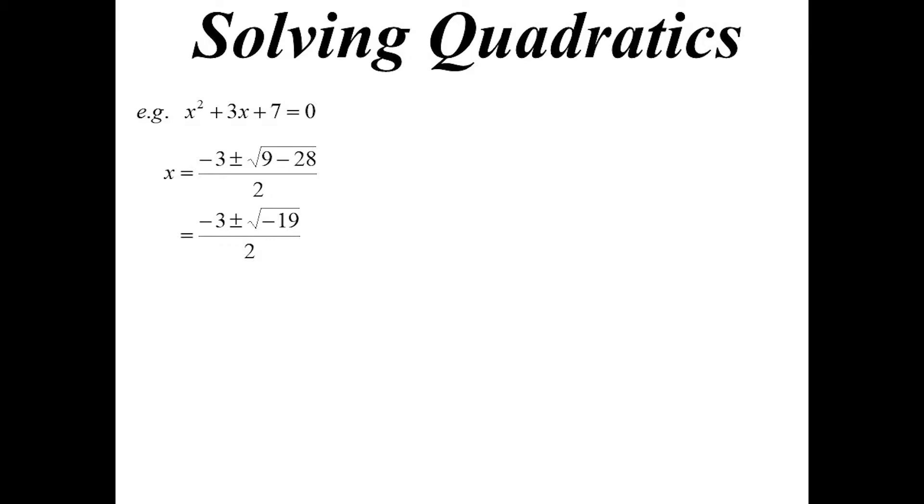Because the square root of negative 19, I can simplify that surd. Remember the idea behind simplifying surds? You're trying to get the number in the surd as a multiple of a perfect square. Well, negative 1 is a perfect square now, because i squared is negative 1.